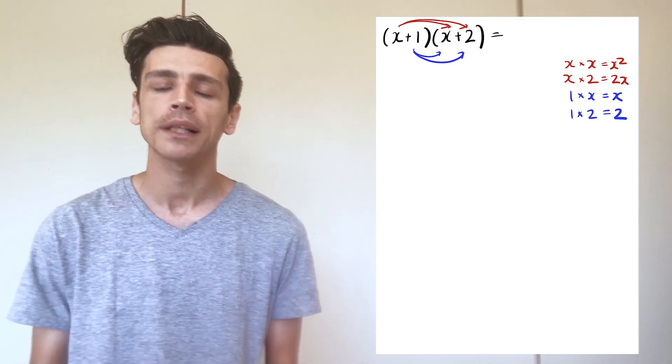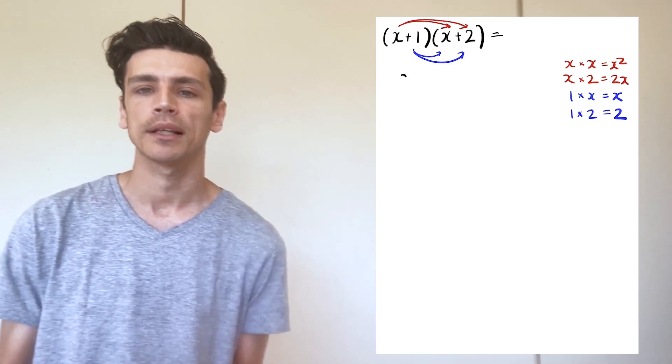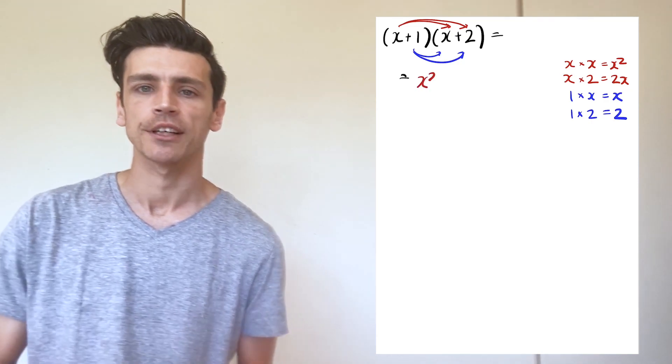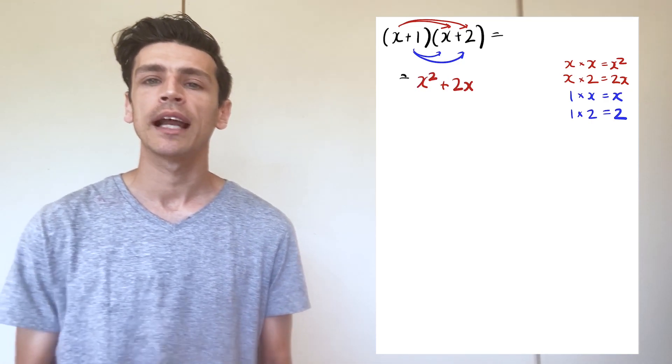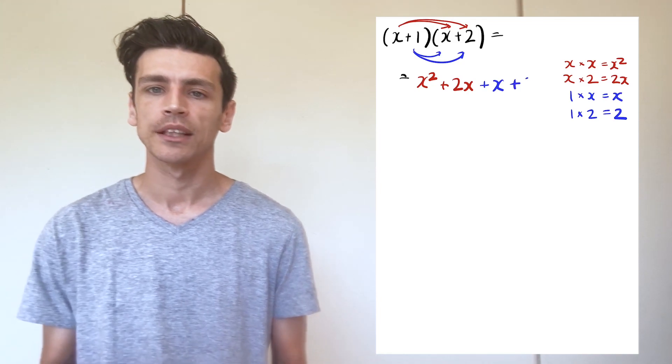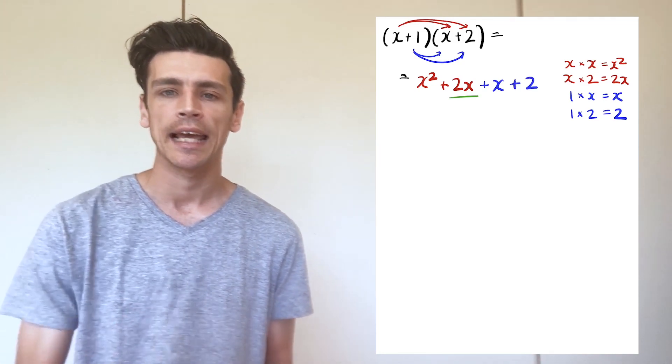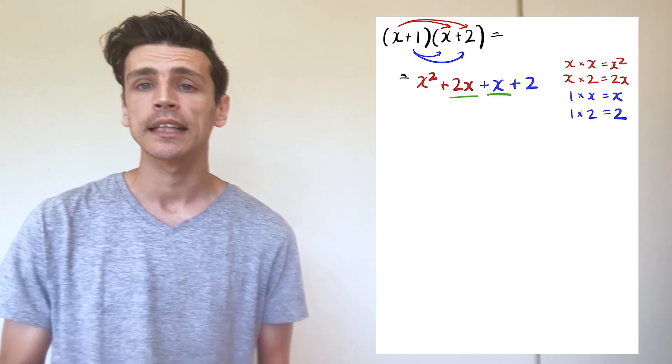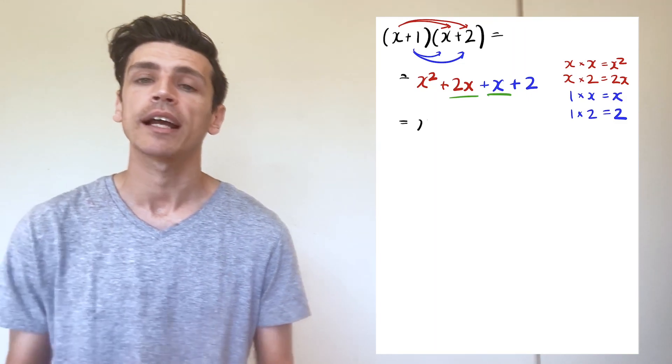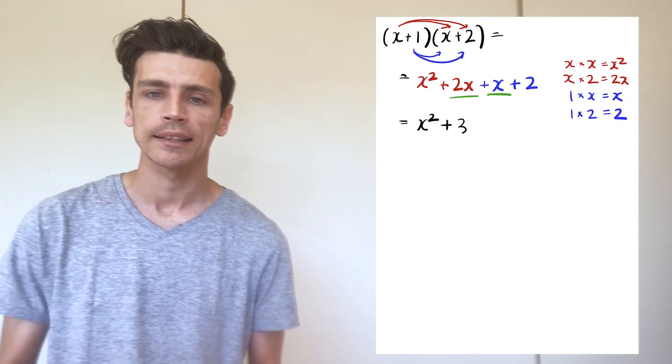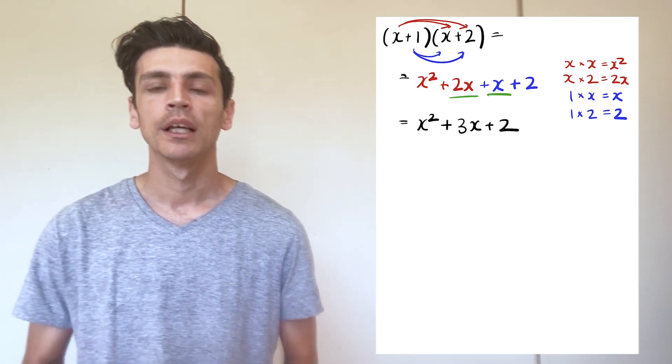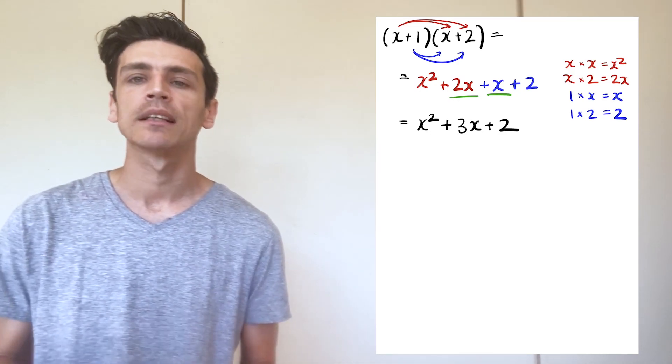Now all I do is I try and find some like terms. I've got x squared plus 2x plus x plus 2. I look for like terms - there are two x's and also an x, so I can add these together to make 3x. So 2x plus x gives me 3x, and x squared plus 3x plus 2 would be my answer.